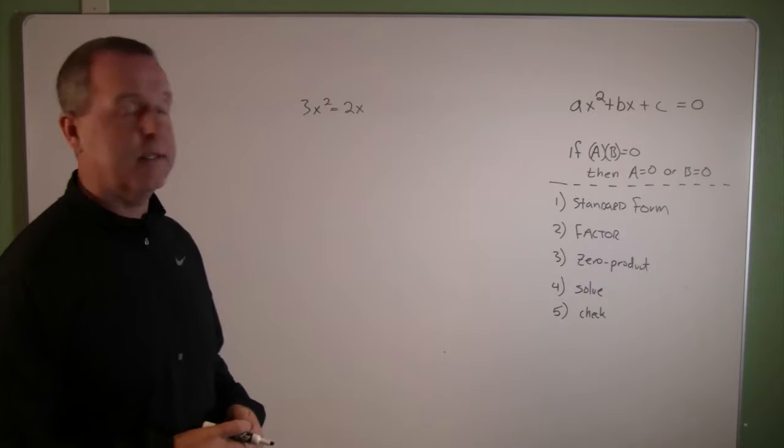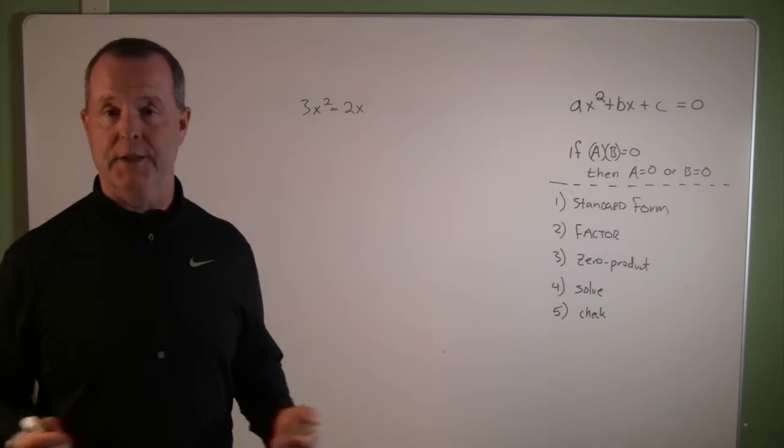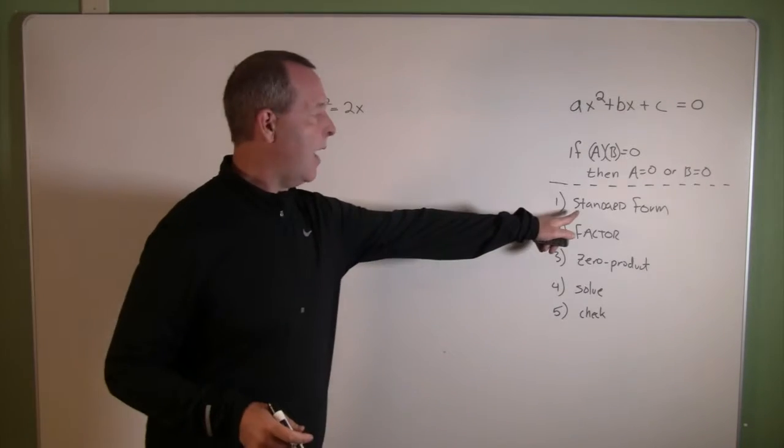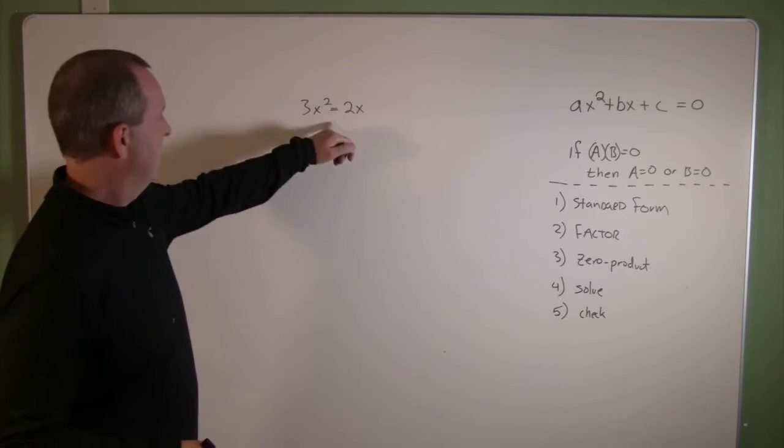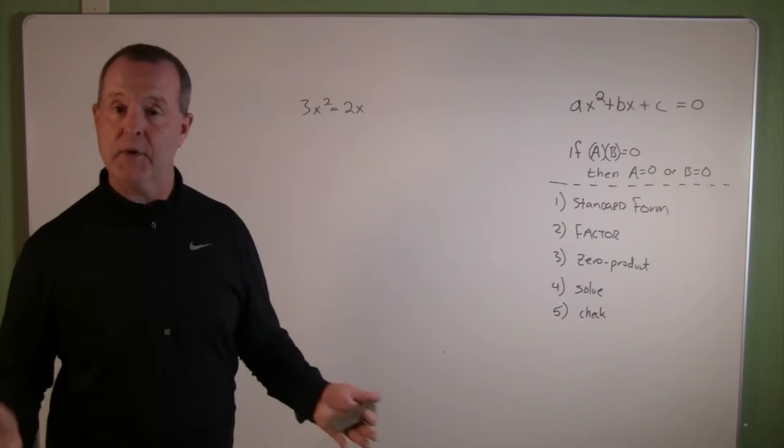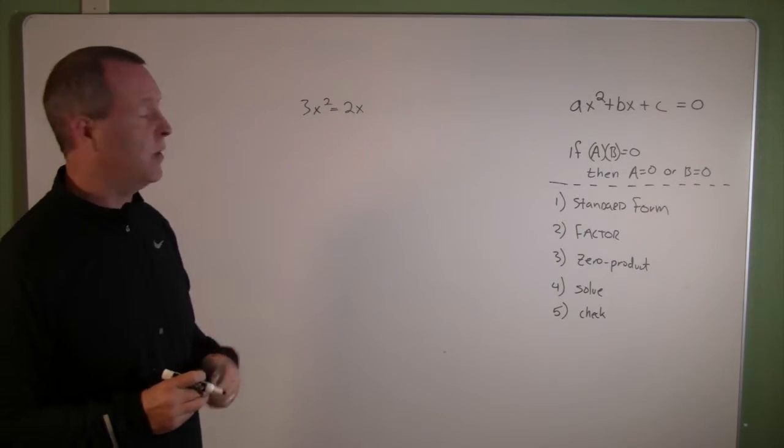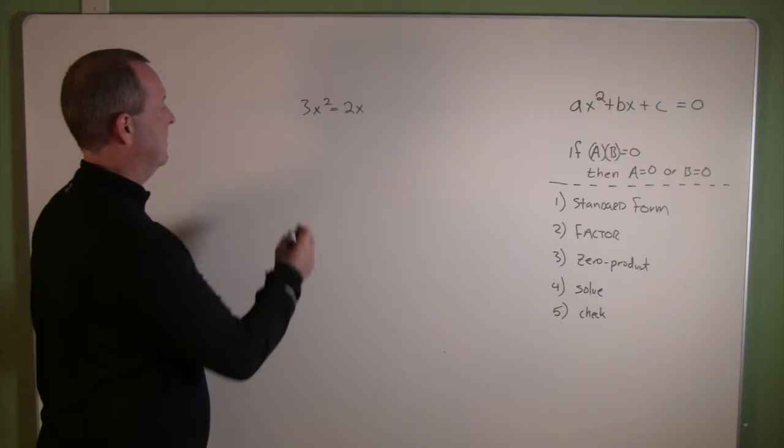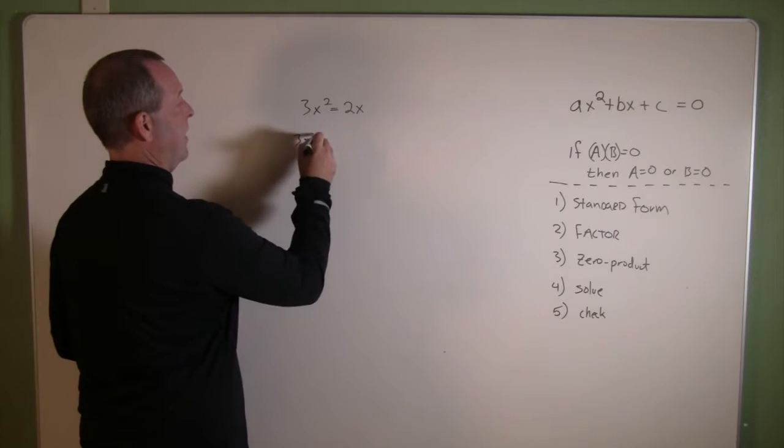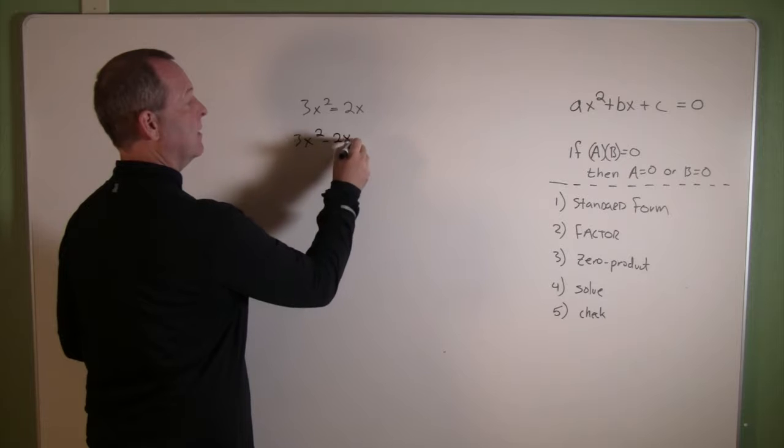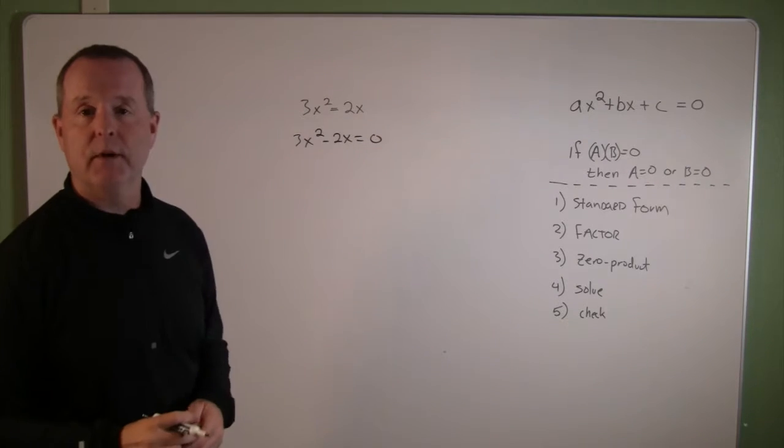Let's continue on our journey here of trying to solve quadratic expressions. So step one, rewrite it in standard form. Well, it's nowhere near standard form, so I need to move it in that direction, so I'm going to subtract 2x from both sides. So I got 3x squared minus 2x equals zero.